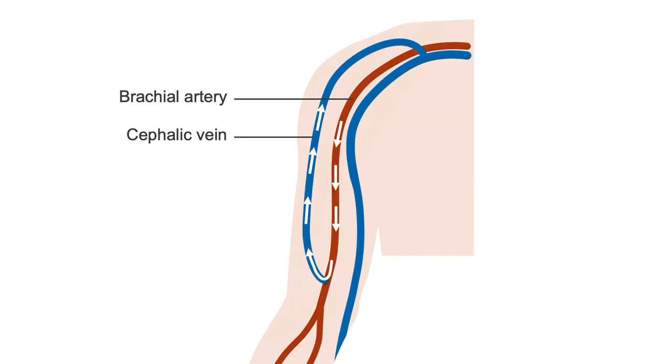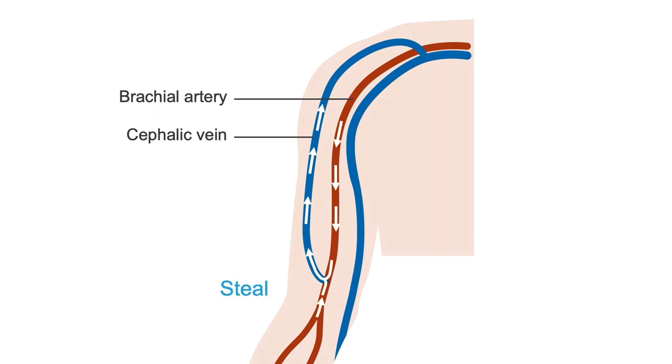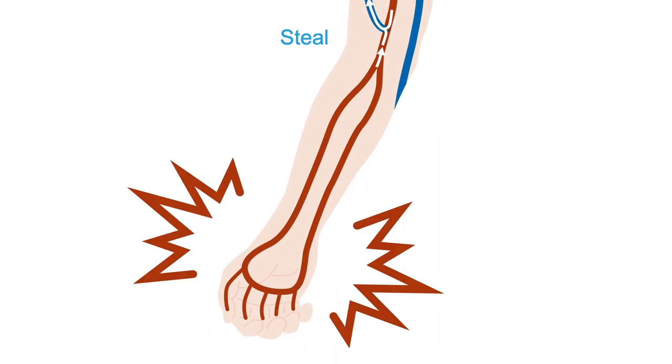However, for a brachiocephalic fistula, if there is steal in the brachial artery, that often causes hand pain and ischemia because no blood will reach either the radial or ulnar arteries. We will discuss steal ultrasound findings more in the interpretation lesson.